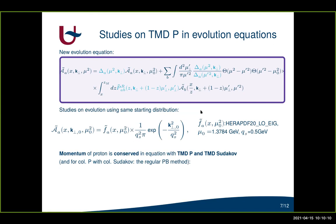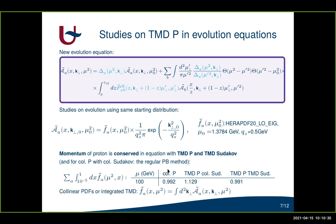Our evolution equation conserves the momentum of the proton, and this is true for our equation with TMD splitting functions and TMD Sudakov form factor, but also for collinear splitting functions with the collinear Sudakov form factor — the normal parton branching method. Numerically, when we sum over all momentum fractions using collinear splitting functions we obtain unit momentum of the proton, and the same when using the TMD Sudakov form factor. However, when we have TMD splitting functions in resolvable branchings but a collinear Sudakov form factor, the proton momentum is not conserved.